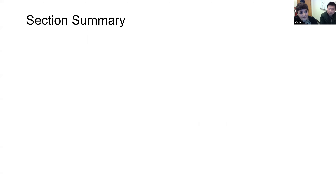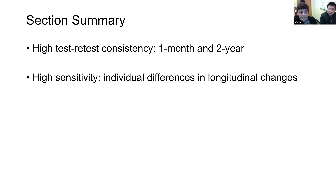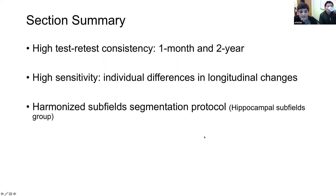In summary, we found high test-retest consistency for both one-month and two-year delays. Using MRI to estimate volumetric measures of the hippocampus is also sensitive to detecting individual differences. This provides validation not only for MRI broadly but also for the manual demarcation protocol we use — the harmonized subfield segmentation protocol — and for automatic or semi-automatic methods based on this manual demarcation.